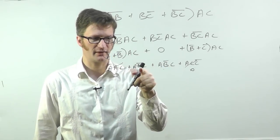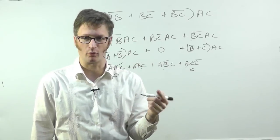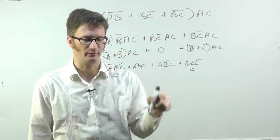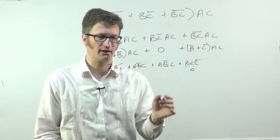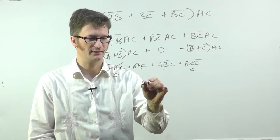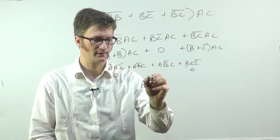So if this works out to zero, then this one will work out to zero, and zero or zero is zero. If this works out to one, and this one works out to one, one or one equals one. And so the final result is just A B bar C.